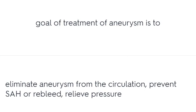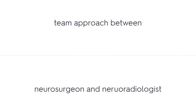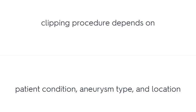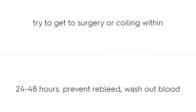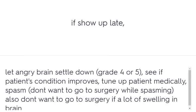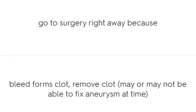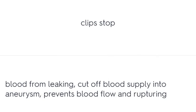The goal of treatment is to eliminate the aneurysm from circulation, prevent rebleed, and relieve pressure. This requires a team approach between the neurosurgeon and interventional radiologist. The clipping procedure depends on patient condition, aneurysm type and location, and whether it is emergent. The goal is to get to surgery or coiling within 24 to 48 hours to prevent rebleed. If the patient shows up late, let the angry brain settle down, see if the patient's condition improves, and medically optimize before surgery.